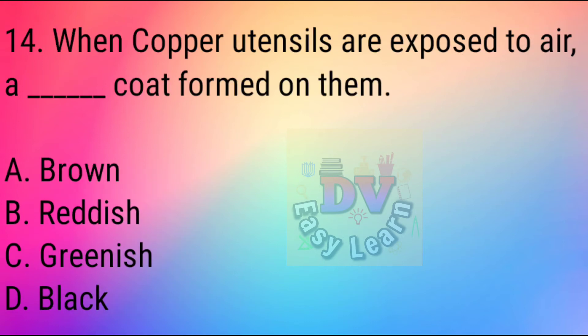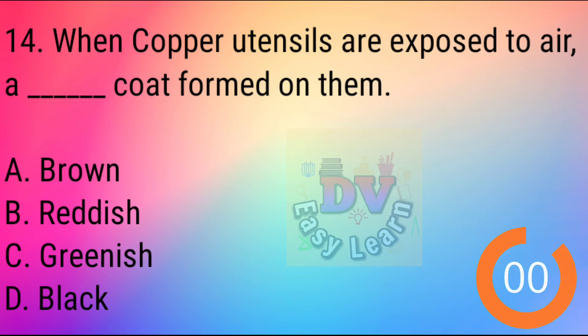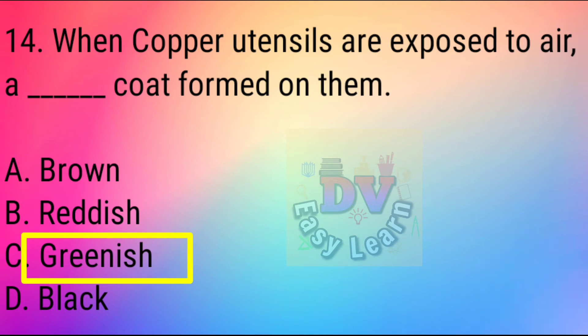Question No. 14: When copper utensils are exposed to air, a dash coat is formed on them — Correct answer: Greenish.